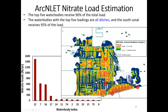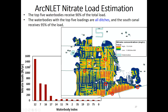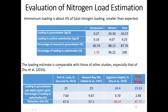For nitrate load, the top five water bodies receive 90 percent of the total nitrate load, and all five are ditches — including ditch 12 and ditch 7. The sauce canal received 95 percent of load, which is very high. In terms of magnitude, maximum ammonium load is about 60 lb/year, while nitrate load is as high as 1,600 lb/year.